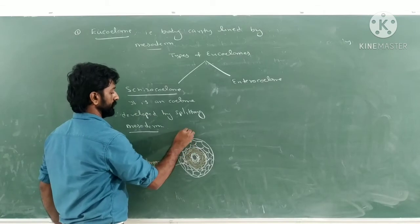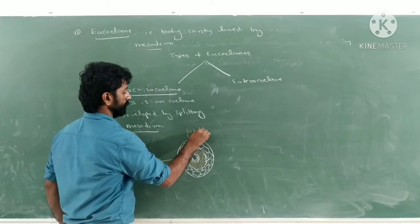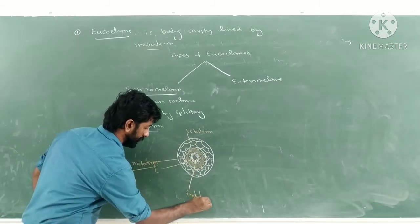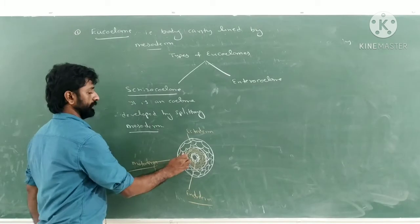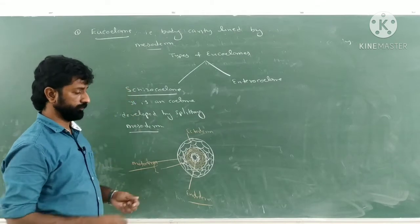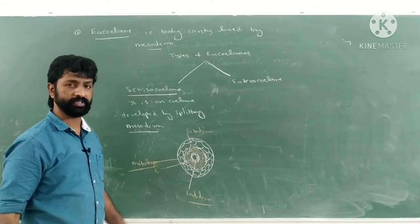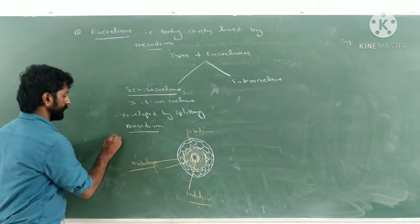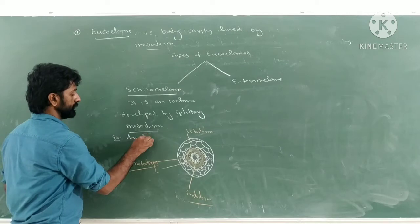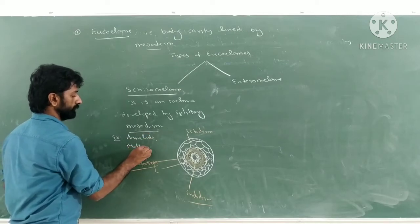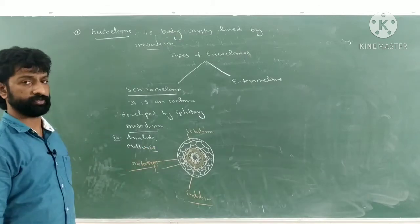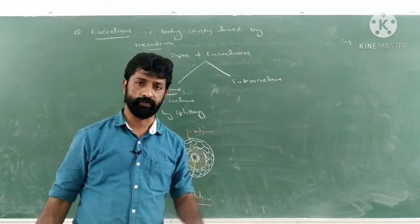The outer layer represents ectoderm and the innermost is endoderm. The coelom developed by splitting the mesoderm is called schizocoelom. Examples of organisms in which schizocoelom develops are annelids and mollusks.